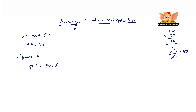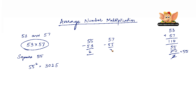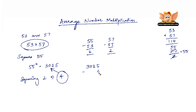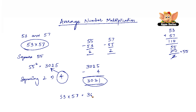Now square the difference between the average and the numbers. The difference between the average and the numbers is: 55 minus 53 is 2, and 57 minus 55 is 2. So the difference is 2, and squaring 2 gives us 4. Subtract 4 from 3025 — 3025 minus 4 is 3021. So therefore, 3021 is the product of 53 and 57.